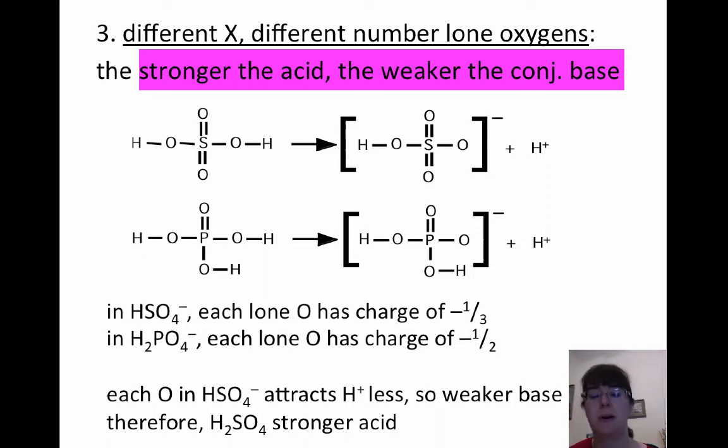We may have talked about this before, but it should make a fair amount of sense that the better the acid is, the weaker, the worse its conjugate base is going to be. So the easiest way to actually assess something with different central atoms and different number of lone oxygens is to actually take a look at its conjugate base.